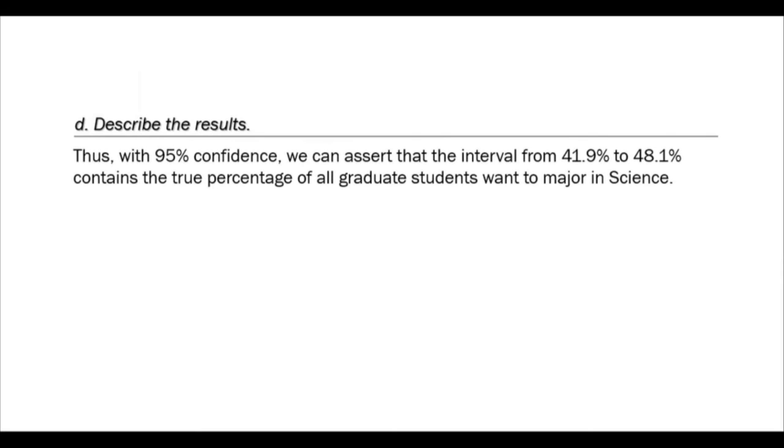Describe the results: Thus with 95% confidence, we can assert that the interval from 41.9% to 48.1% contains the true percentage of all graduate students who want to major in science.